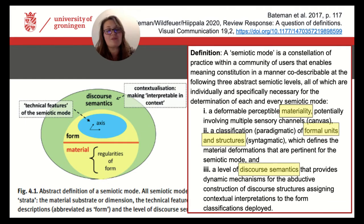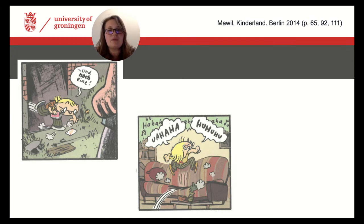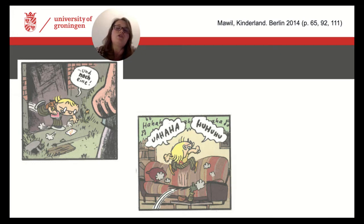Now let's see how this definition can be used to do some actual analysis. Here are some example panels from the German graphic novel Kinderland by the artist Marville from 2014. Kinderland is a typical visual narrative that tells us about the life of the protagonist Mirko in the German Democratic Republic, shortly before the fall of the Berlin Wall in 1989. The graphic novel is designed with a variety of semiotic elements such as several lines, drawings, onomatopoetic forms, different color schemes in the background of panels, and many others. The page layout is rather regular in a table grid, and sometimes smaller elements such as speech bubbles overlap.